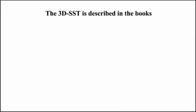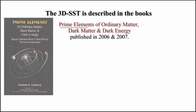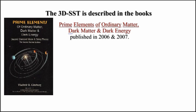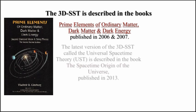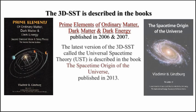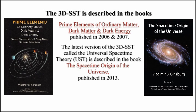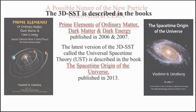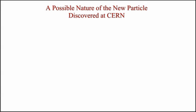The 3DSST is described in the books Prime Elements of Ordinary Matter, Dark Matter and Dark Energy, published in 2006 and 2007. The latest version of the 3DSST, called the Universal Spacetime Theory UST, is described in the book The Spacetime Origin of the Universe, published in 2013.